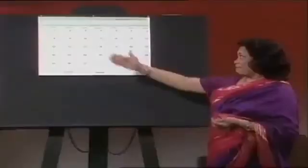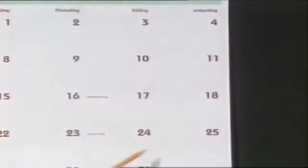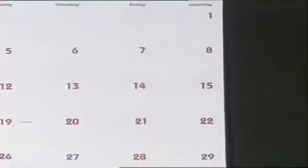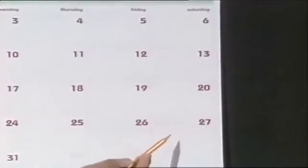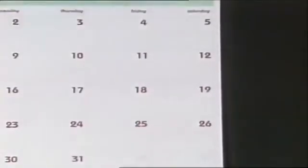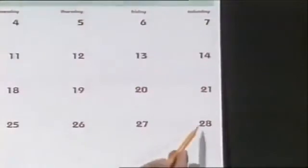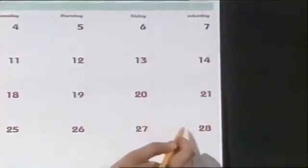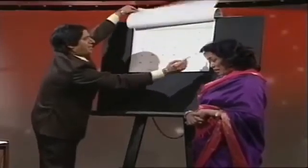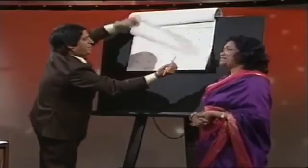Give us all the dates of the Saturdays this year, from January 1st to December 31st. January: 7, 14, 21, 28. February: 4, 11, 18, 25. March: 4, 11, 18, 25. April: 1, 8, 15, 22, 29. May: 6, 13, 20, 27. June: 3, 10, 17, 24. July: 1, 8, 15, 22, 29. August: 5, 12, 19, 26. September: 2, 9, 16, 23, 30. October: 7, 14, 21, 28. November: 4, 11, 18, 25. December: 2, 9, 16, 23, 30.